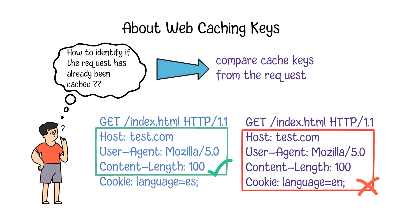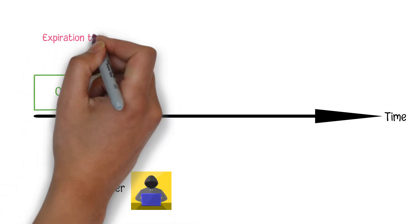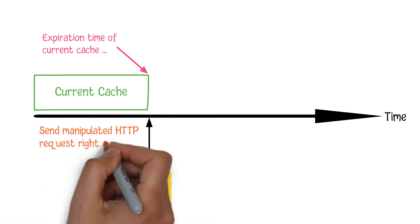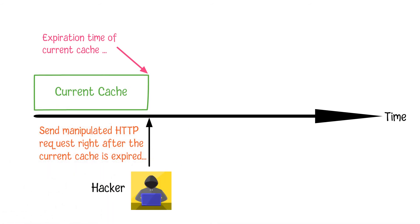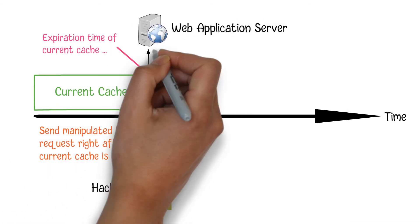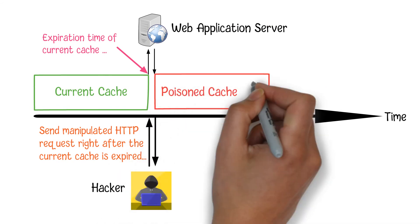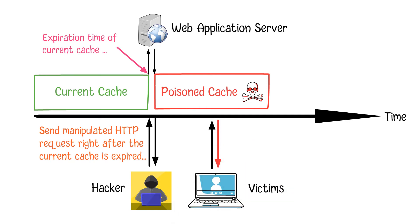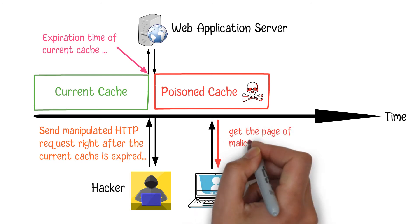Because each cached page has its expiry date and time, as a hacker, what he needs to do is to prepare a manipulated HTTP request and patiently wait for the current cache's next expiry time. Once he finds that page is expired, he needs to send his malicious request immediately, which will leave a copy of the malicious response in the cache. Then any subsequent requests will get a copy of this response, which may include some malicious JavaScript code on the page.